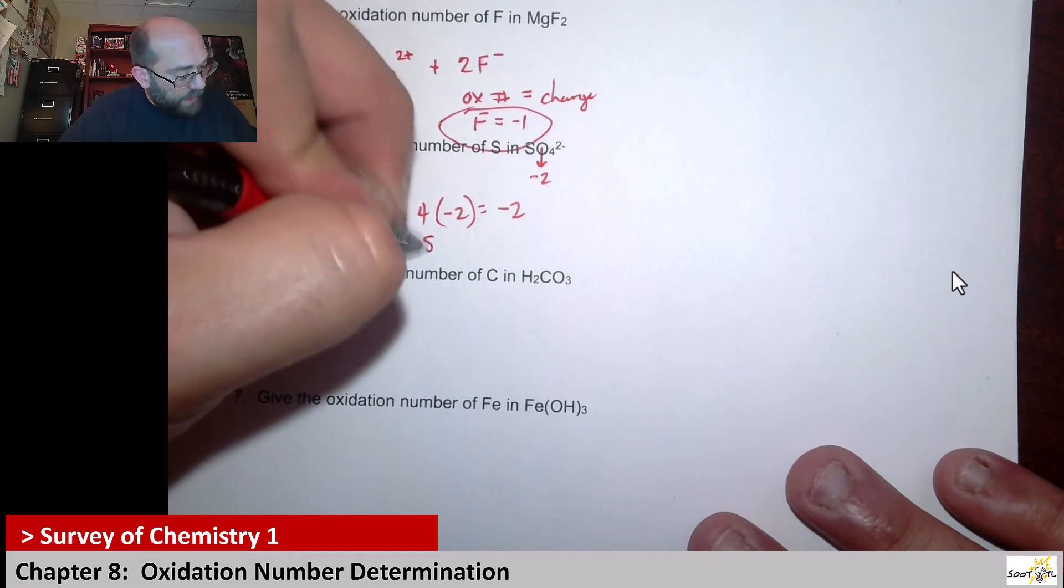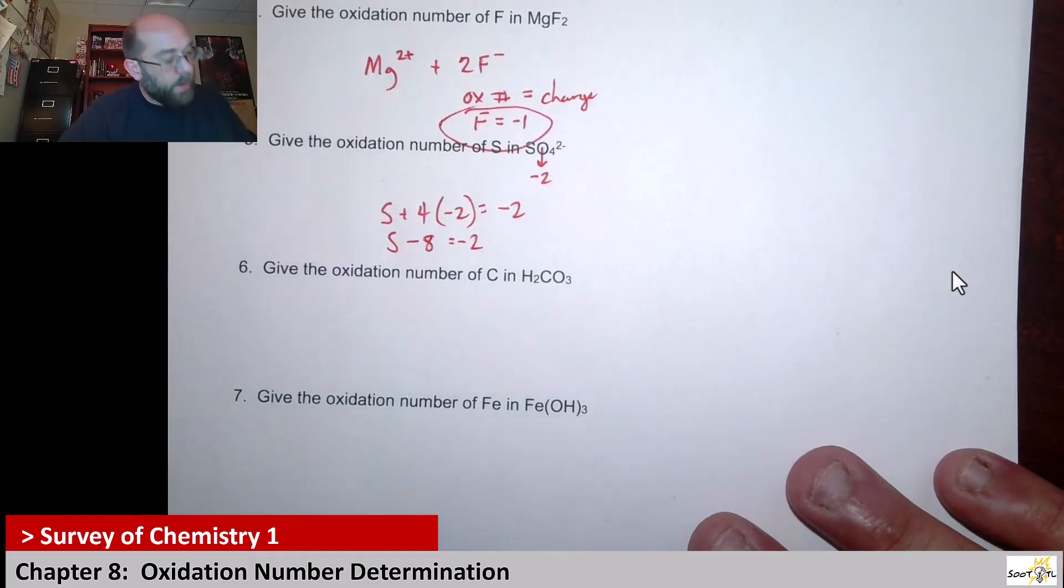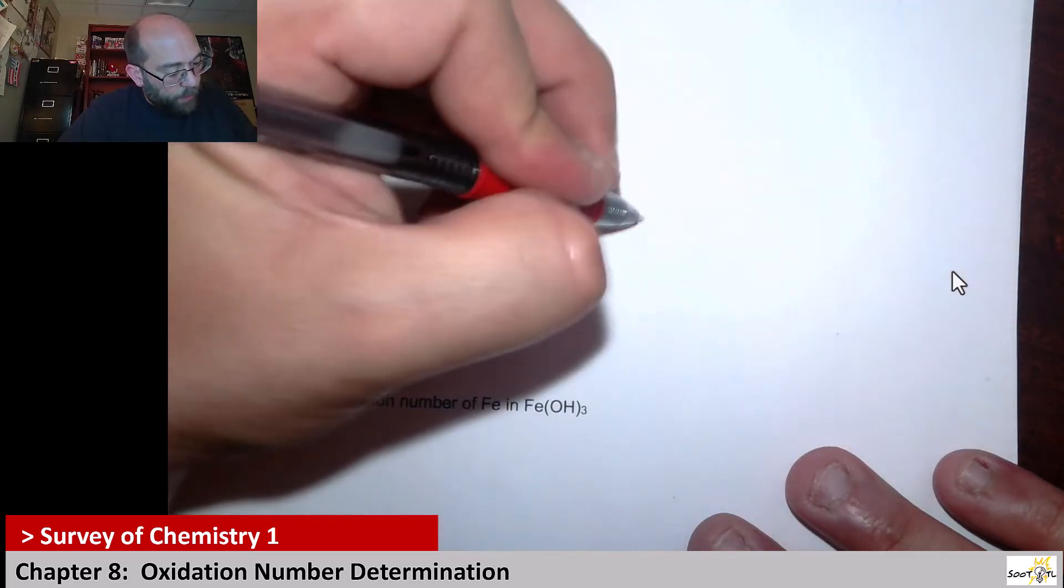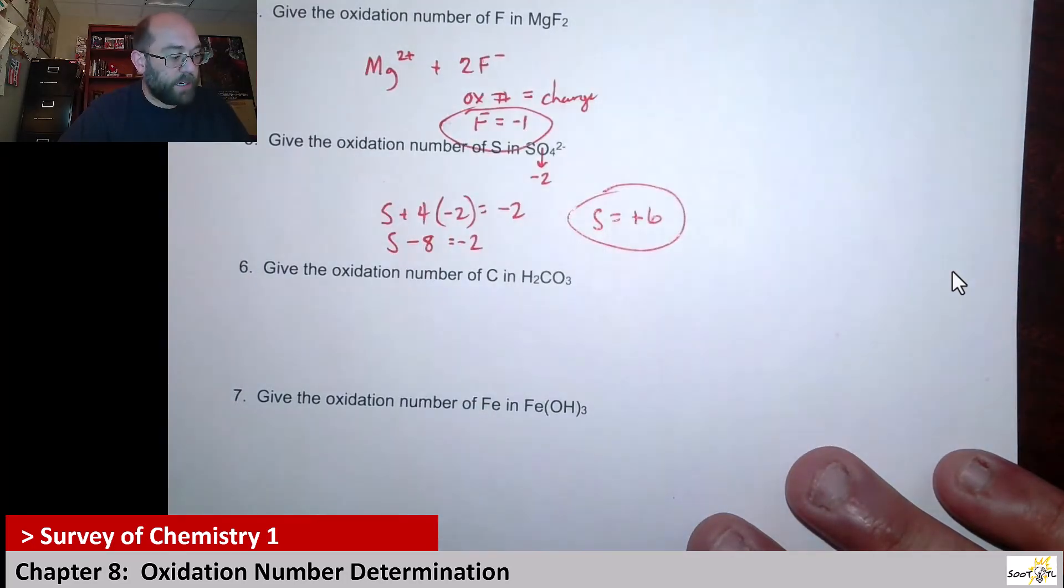That would say sulfur plus 4 times -2 is going to be equal to -2. So that's sulfur - 8 = -2. We add 8 to both sides; the sulfur is going to be equal to positive six. So that's our oxidation number on the sulfur of sulfate.